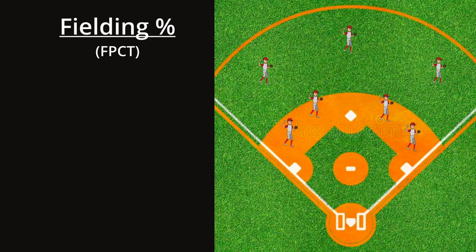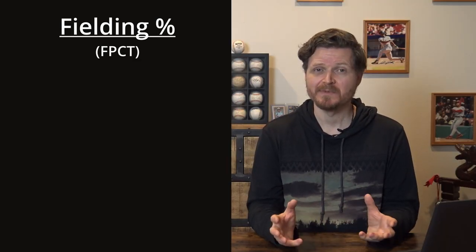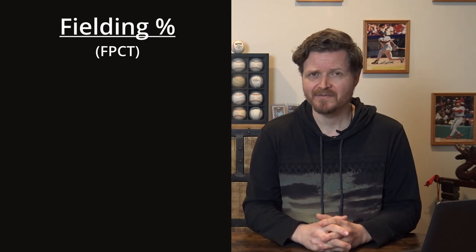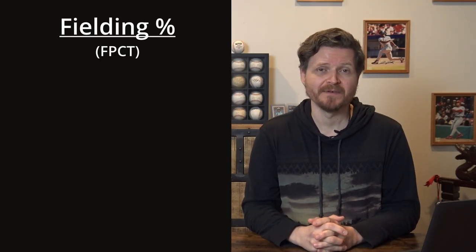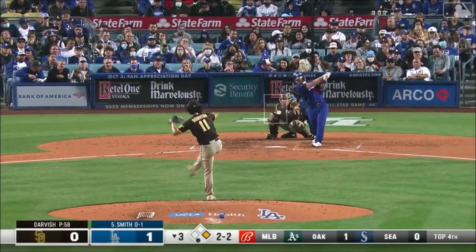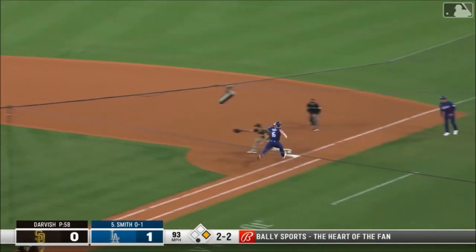However, fielding percentage alone is not a very good stat — it can be very misleading. The positions with the best historical fielding percentages are first basemen and outfielders, which are easier to play, and teams often put weaker defensive players there. Meanwhile, shortstops and third basemen — where the best defensive players typically play — have historically had the worst fielding percentages because they have the most difficult plays and throws to make.